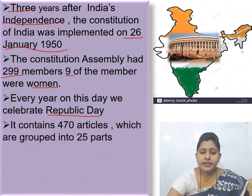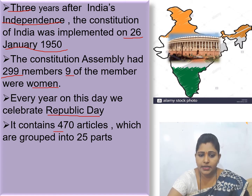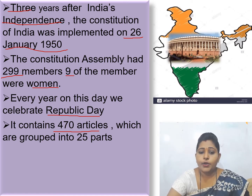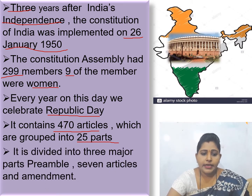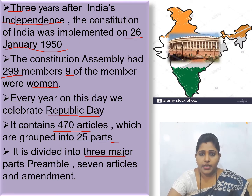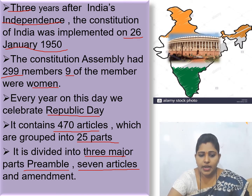The Constitution contains 470 articles, which are grouped in 25 parts. It is divided into 3 major parts: the preamble, 7 articles, and amendment.